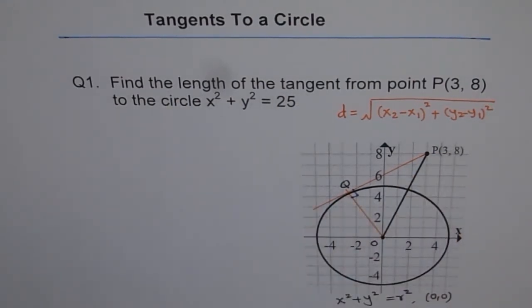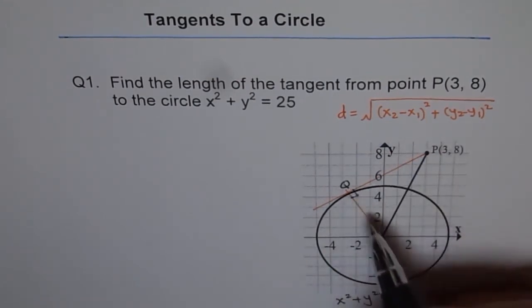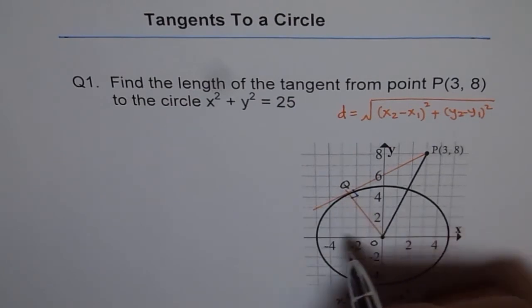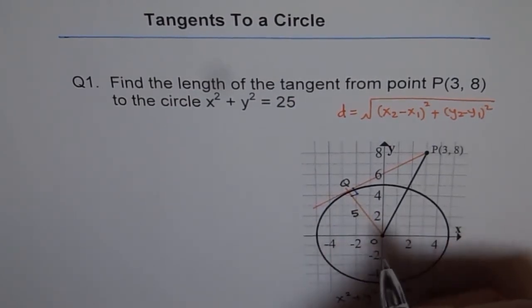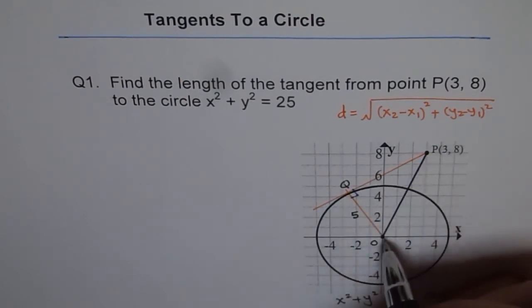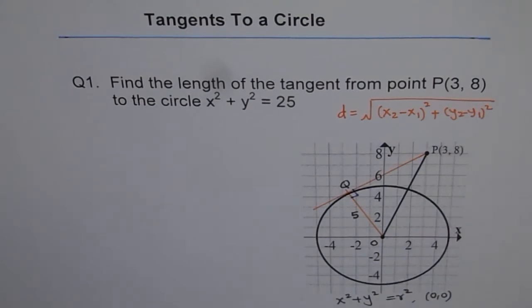Now, in this triangle, we need to find PQ. We already know OQ. OQ is the radius of this circle, which is 5. And OP is unknown at present. But OP can be found using Pythagorean theorem.